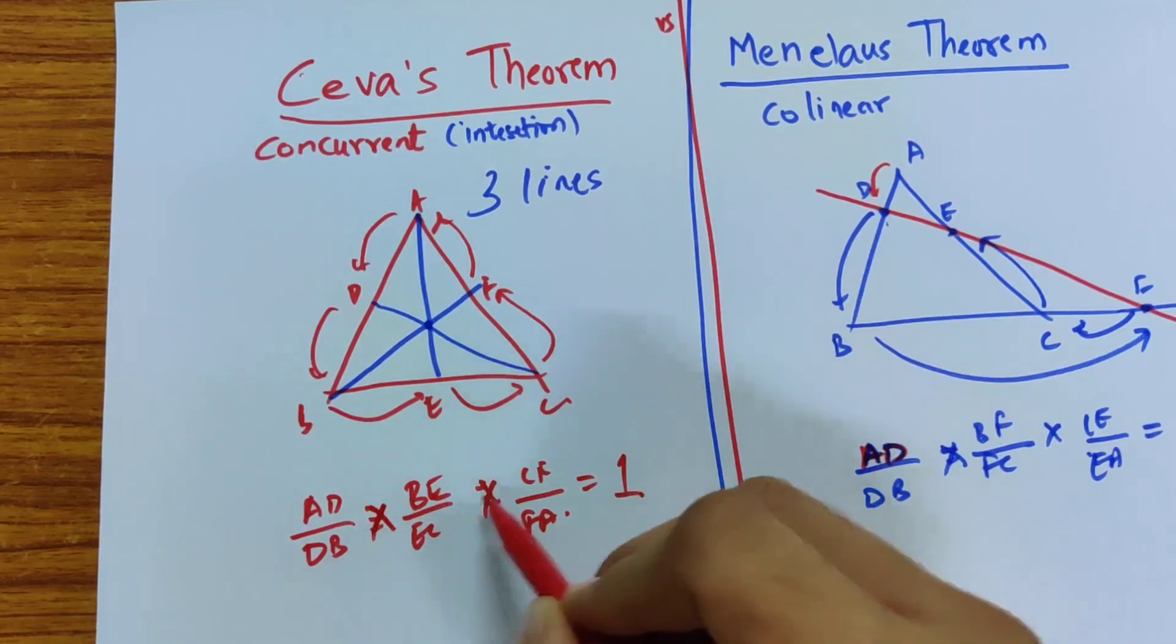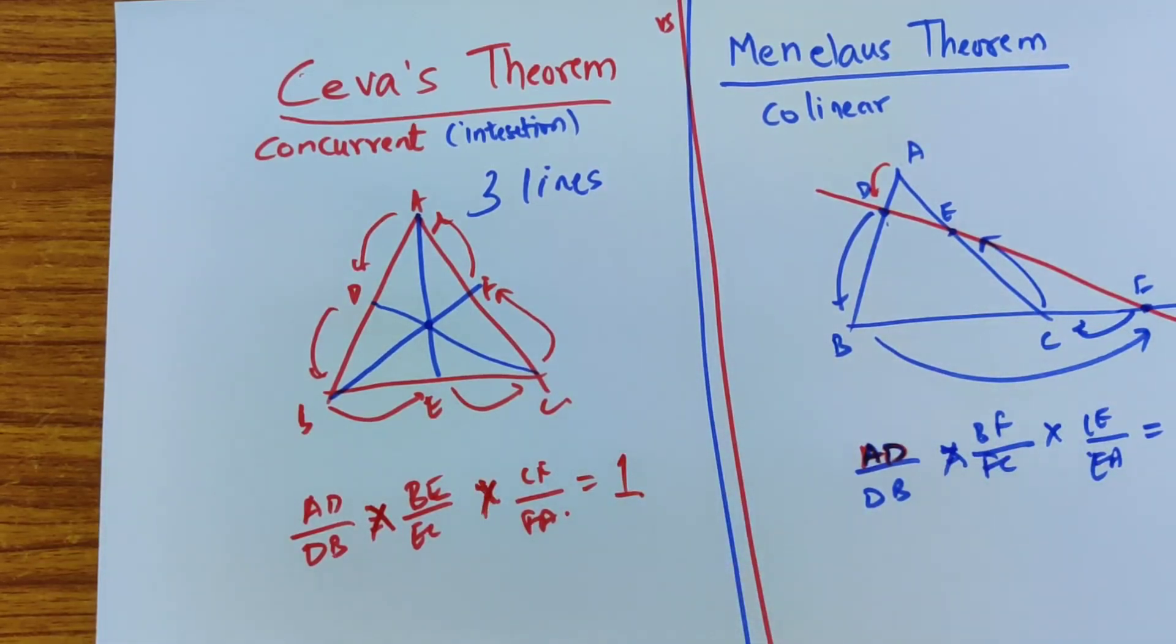I'm sorry about that. So this should have been multiplied. This is also multiplied. And this is negative 1 in which the term where the F is outside, this is what is negative.